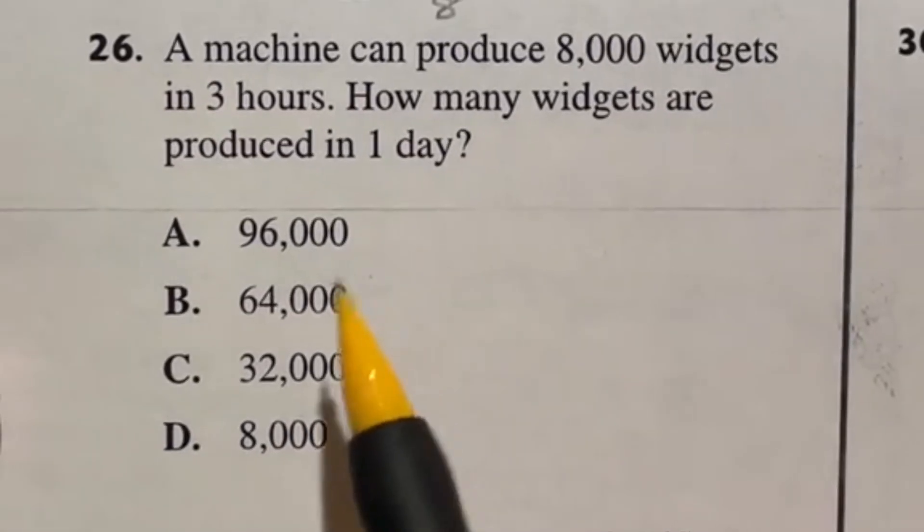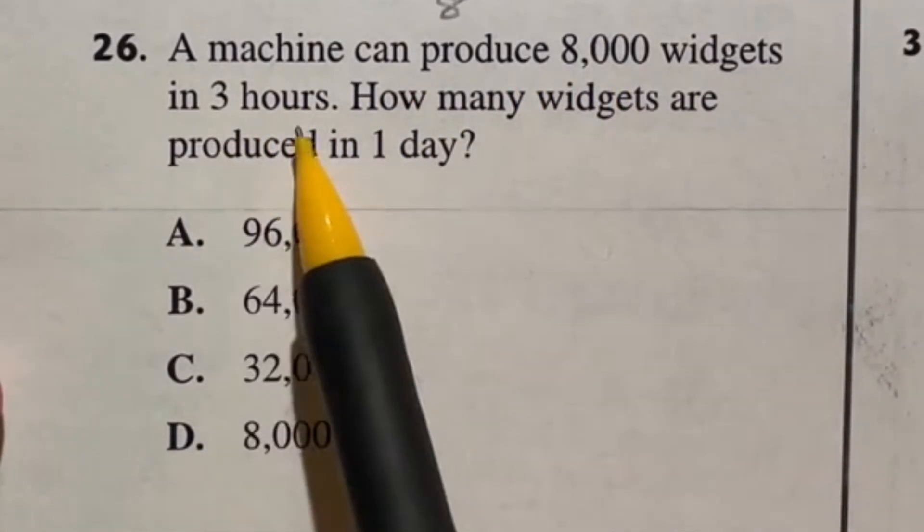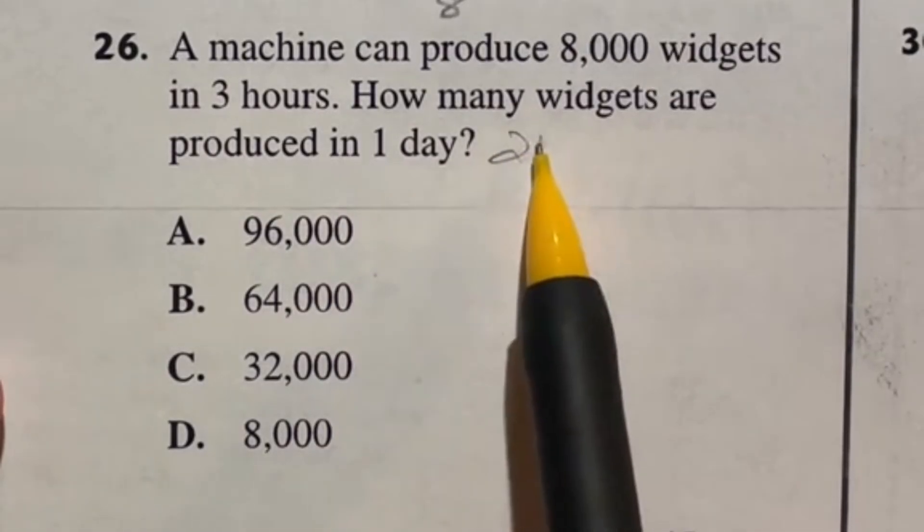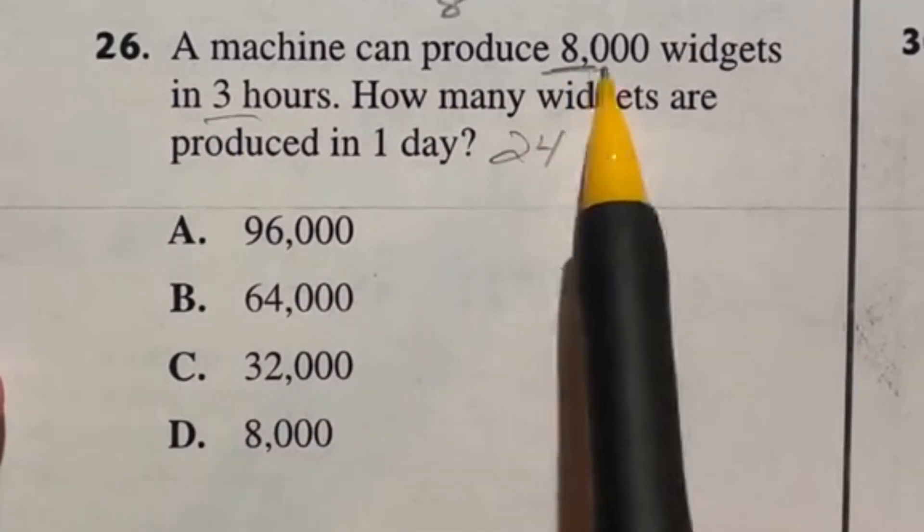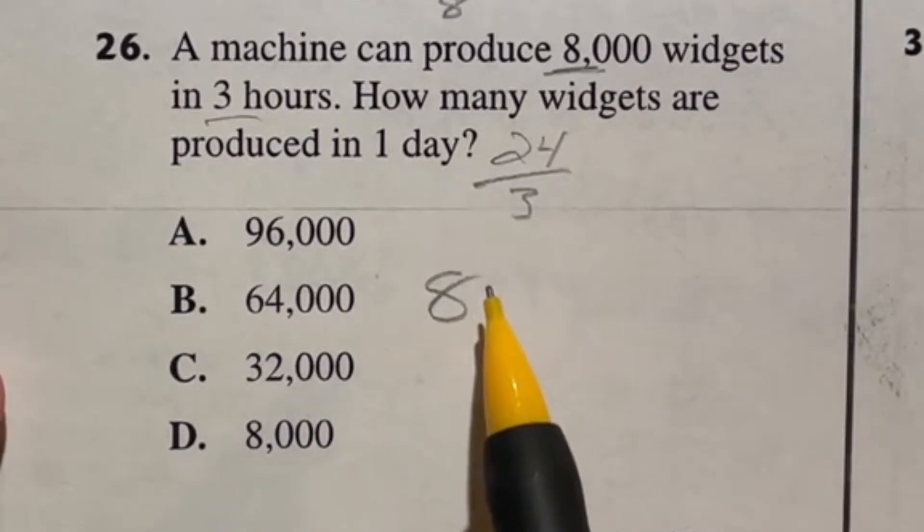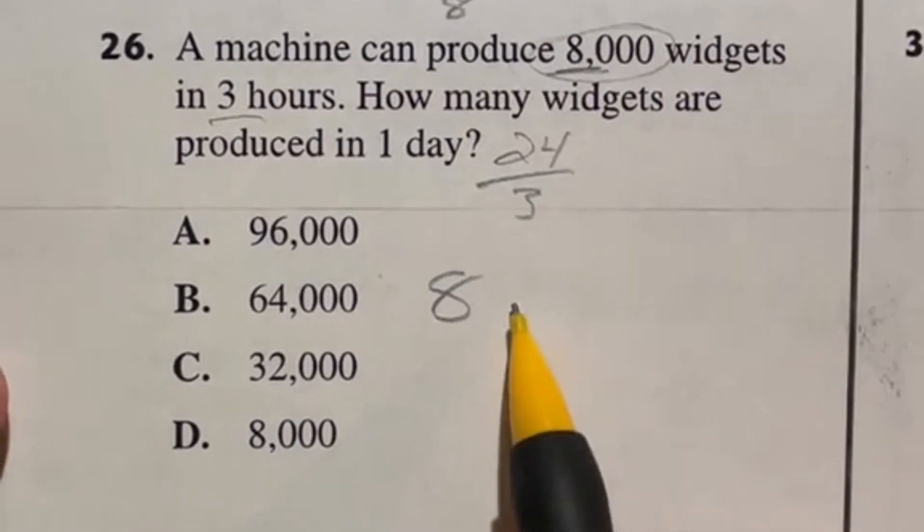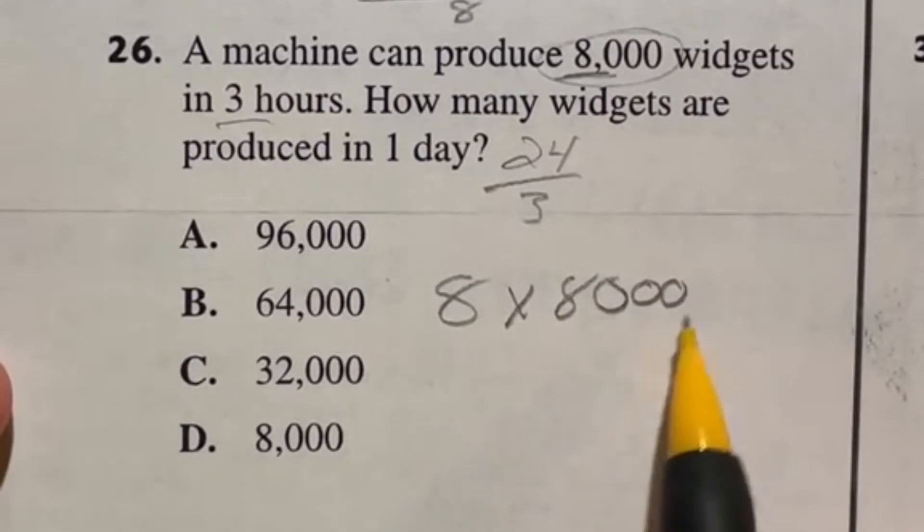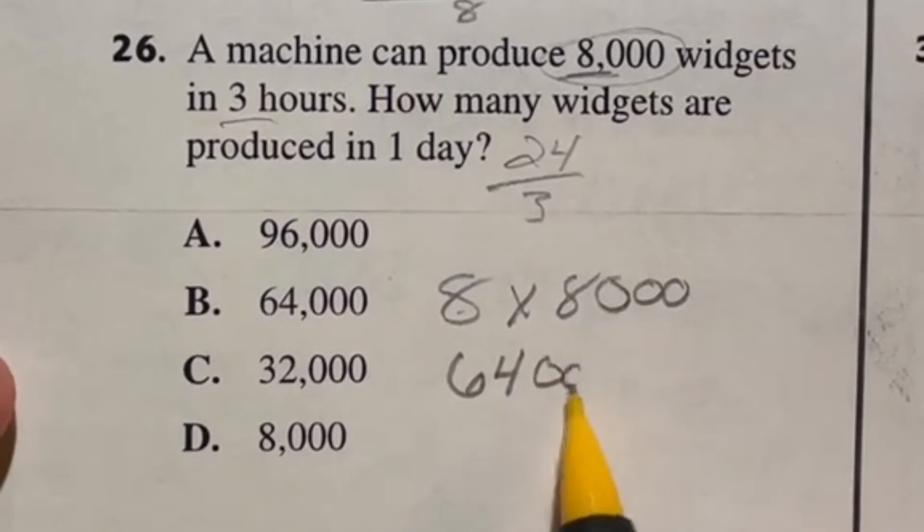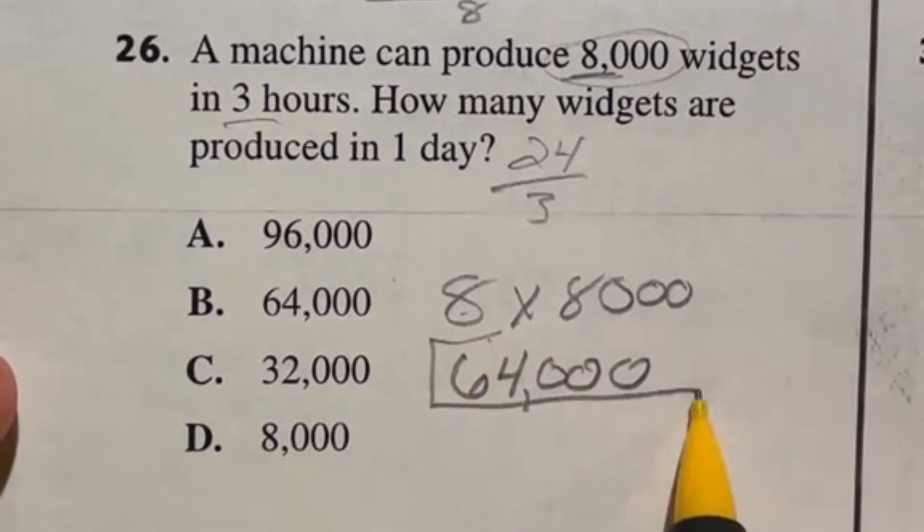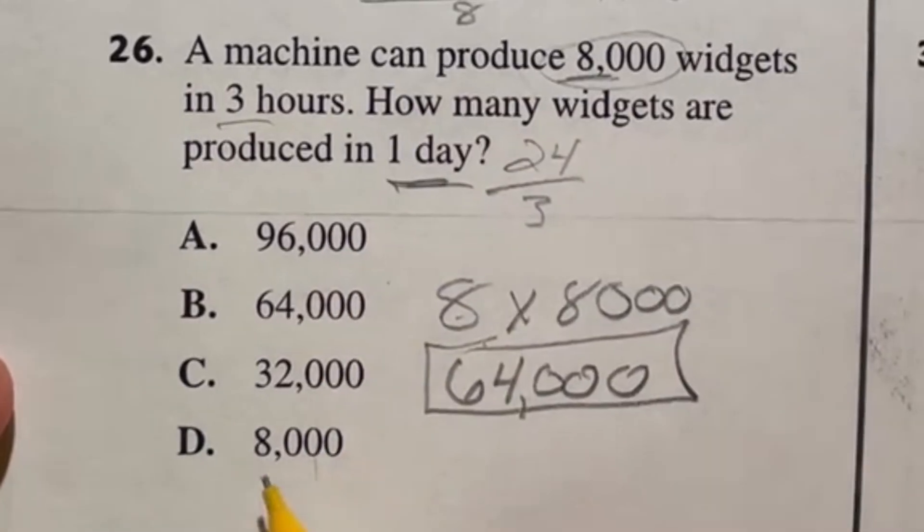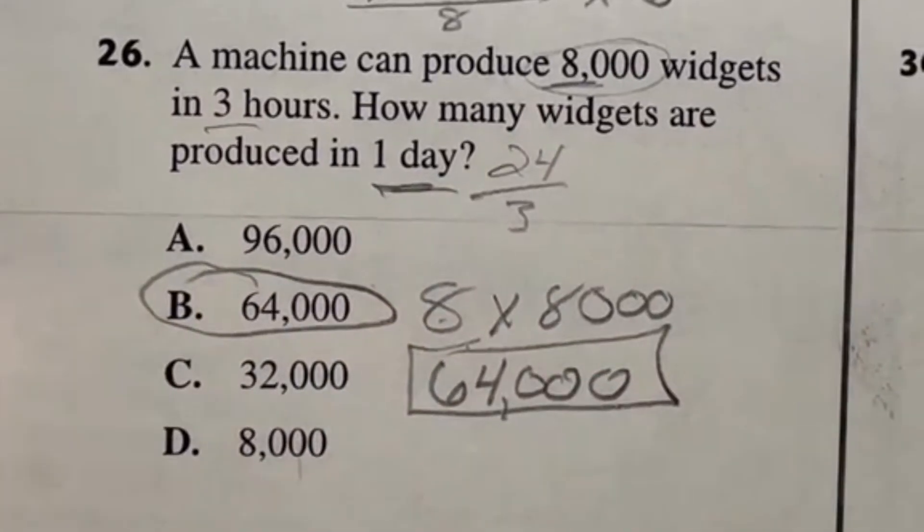This is one of those questions you can probably knock out in a few seconds. Number 26: a machine can produce 8,000 widgets in three hours. How many widgets are produced in a one day? In one day is 24 hours. We know in three hours they can do 8,000 widgets. So how many three hour periods are there in 24? 24 divided by three is eight. So that means we have eight of these periods going on. So all I really need to do here is eight times that 8,000 widgets and it will give me my final answer. Eight times eight is going to give me 64, and then I still need to bring down those three zeros. That means we're going to end up with a total of 64,000 widgets in that one day period. So looking through my answers here, it looks like that's going to be answer B.